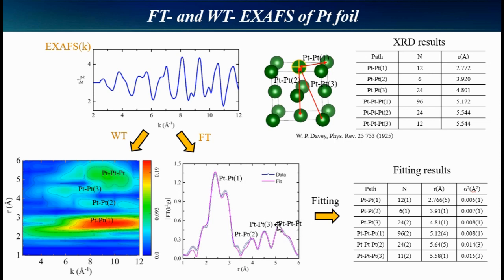After fitting, we can get the local structure information, including the coordination number, bonding length, and the Debye-Waller factor sigma-square shown in the table.